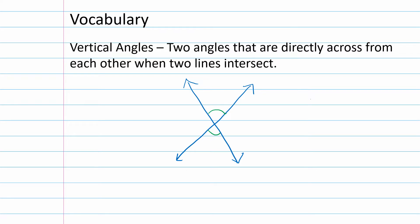Vertical angles are congruent — congruent means they are equal. So if this angle is 30 degrees, the vertical angle must also be 30 degrees. With intersecting lines, there are two sets of vertical angles: the green angles are congruent to each other, and the purple angles are congruent to each other. The green and purple are not vertical angles with each other.